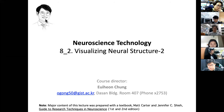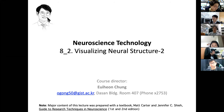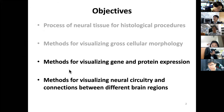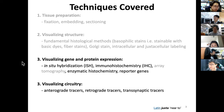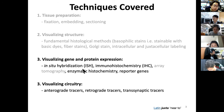Today we will go over the next part of visualizing neural structures. There are a number of things we will be covering: first, methods for visualizing not just morphology, but gene and protein expression, and also how to utilize neural circuitry and connections between different brain regions. The specific techniques we will cover include in situ hybridization, immunohistochemistry, enzymatic histochemistry, and reporter genes.